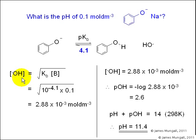So to calculate the pH of a weak base, we say hydroxide concentration equals the square root of Kb multiplied by the base concentration, which is in this case square root of 10 to the power minus 4.1. That's converted our pKb value into a Kb value, just like we would do to convert pH and H plus concentration, multiplied by 0.1, which gives a hydroxide concentration of 2.88 times 10 to the minus 3.